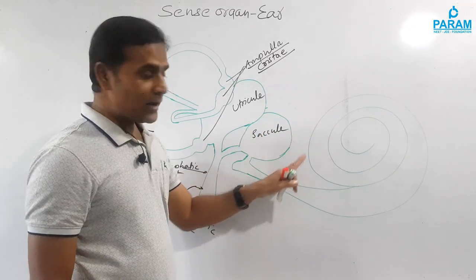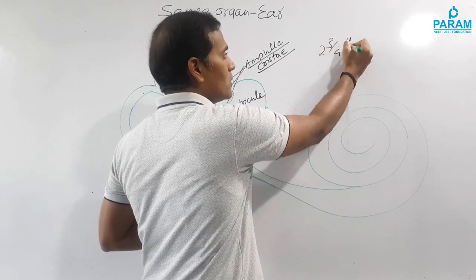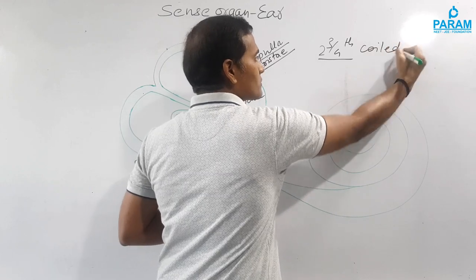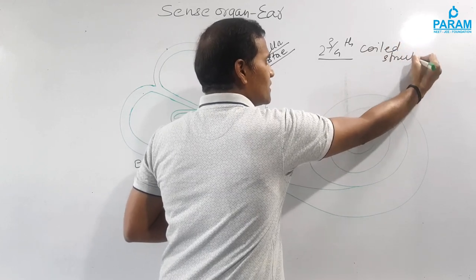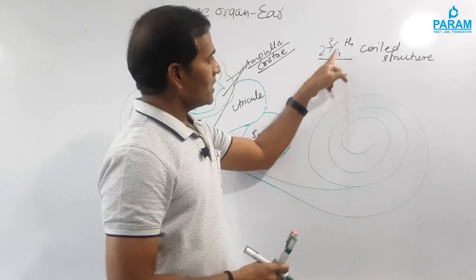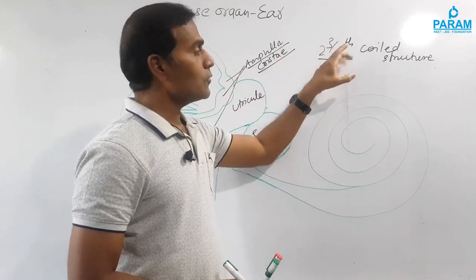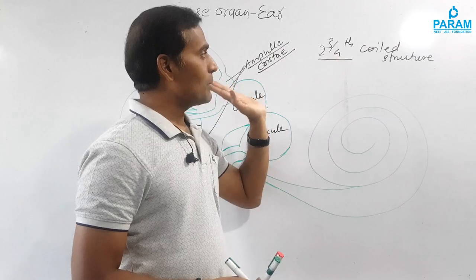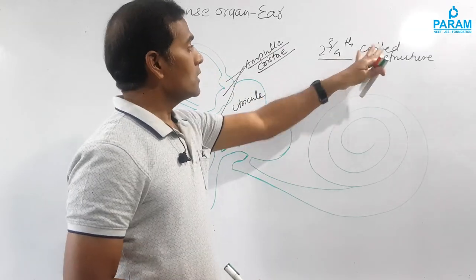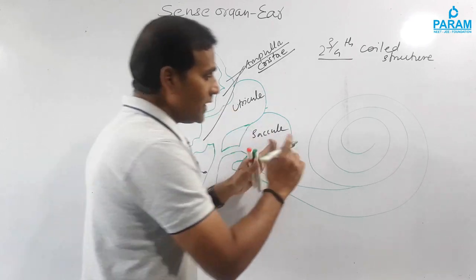The cochlea is a two-and-three-quarter coiled structure. This means it completes two full rounds, but the third round is incomplete — only three-fourths of the last round is completed. That is why it is described as a two-and-three-quarter coiled structure.